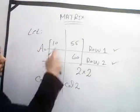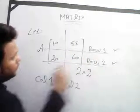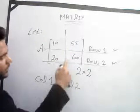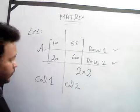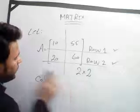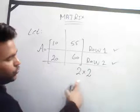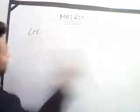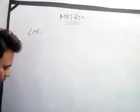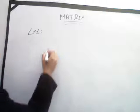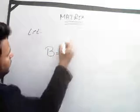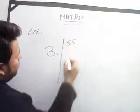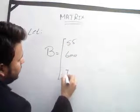Let's look at another example. Matrix B equals 55, 600, and 70. How can we find the order of this matrix? This one is row one, this one is row two, and this one is row three. There is only one column, so the column is one.